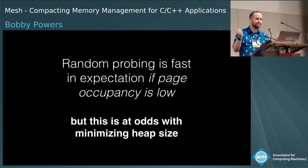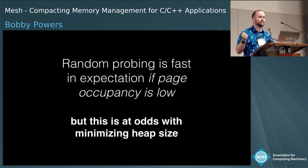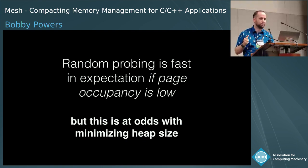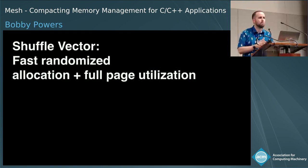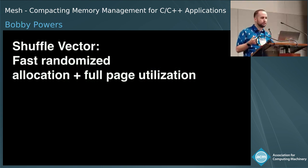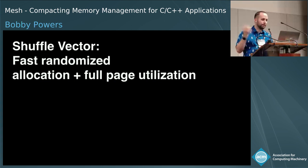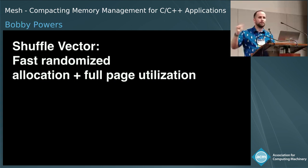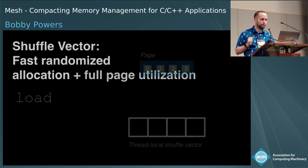Unfortunately, random probing is at odds with what we're trying to solve with Mesh — minimizing heap size and maximizing usage of these pages. So we introduced a new data structure called the shuffle vector to provide fast random allocation while fully utilizing all of those pages.